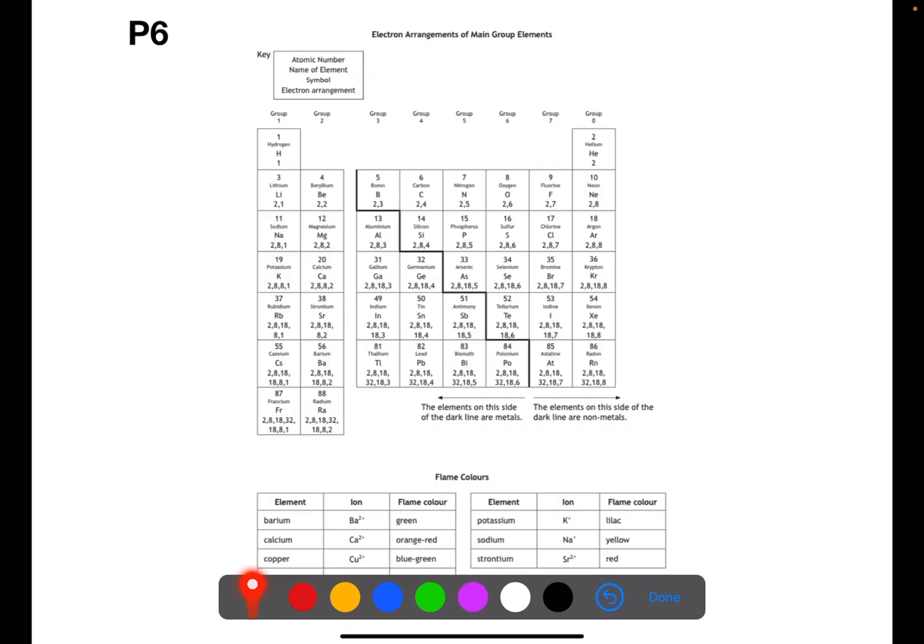On page six you have the electron arrangement of the main group elements. The main group elements are those within the groups and not the transition metals. This part of the periodic table shows you the atomic number, the name of the element and the symbol, as we had on page four, but it also gives you the electron arrangement underneath. For example, two comma one for lithium, where you have two electrons in the inner shell and then one electron in the outer shell. This page is useful for when you're looking at bonding as it allows you to draw out electron diagrams. It will also allow you to draw dot and cross diagrams and again you can use the group numbers to help you with valency.